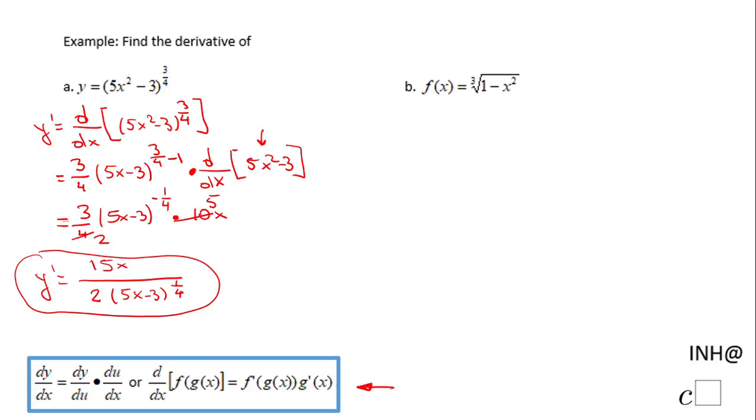Of course, you can use the radical form of (5x² - 3) to the 1/4, that will be another good form. Let's move to the second part.